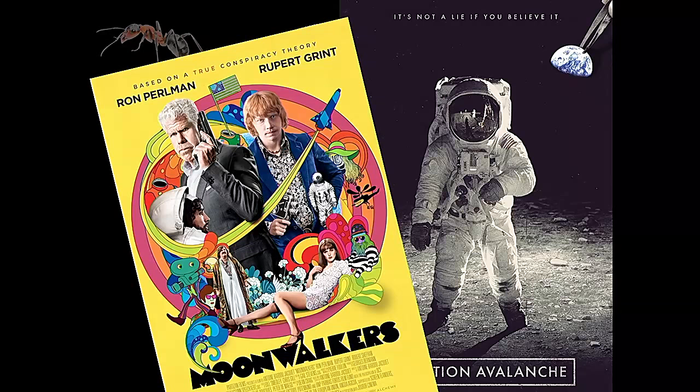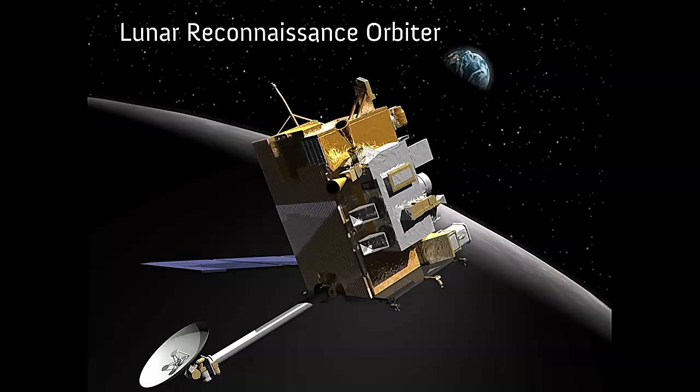For the conspiracy theorists, sending photons to the Moon and seeing them arrive back with our eyes or single photon detectors probably isn't enough to convince you that we went to the Moon. There's better evidence. We can just look at the Moon itself. How do we do it? We use the Lunar Reconnaissance Orbiter.